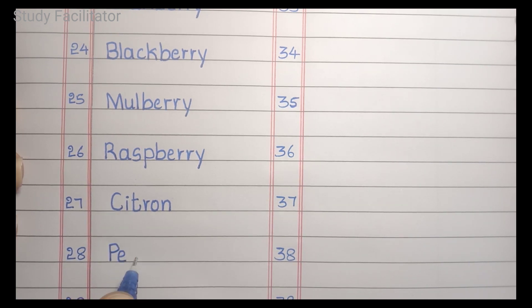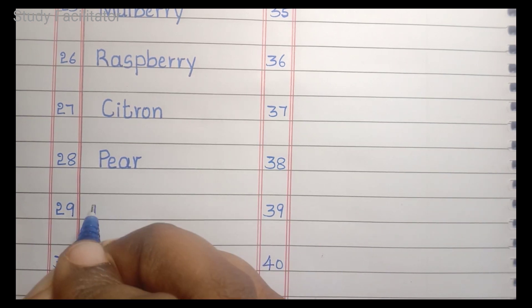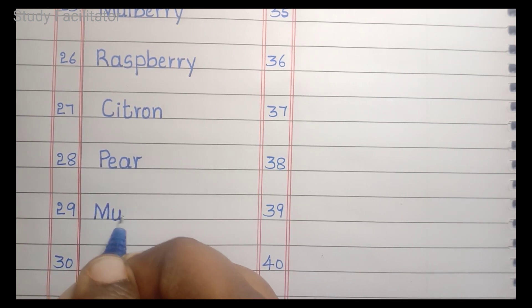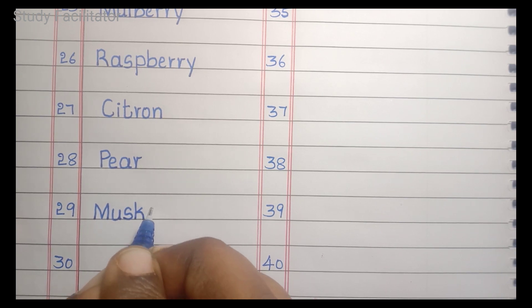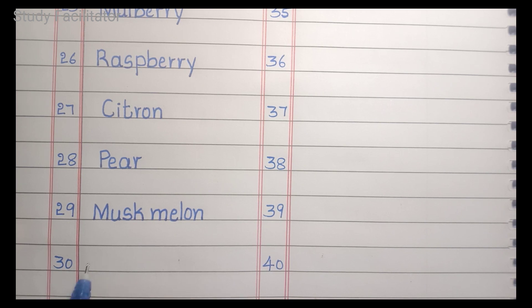Pear. P, E, A, R. Pear. Muskmelon. M, U, S, K, M, E, L, O, N. Muskmelon.